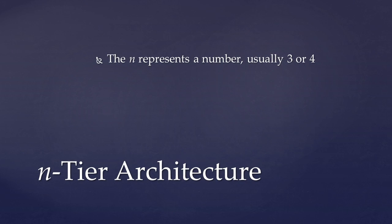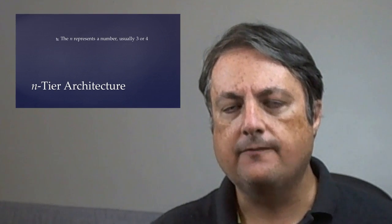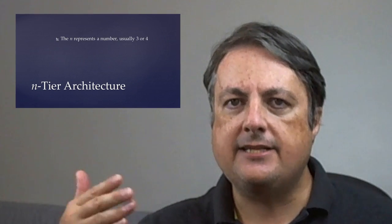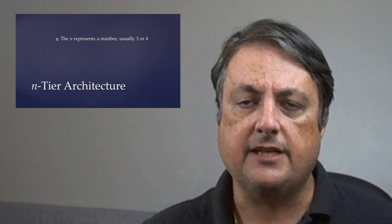The N in N-tier architecture just represents any number. Sometimes it's called a three-tier architecture or a two-tier architecture, but N-tier architecture means it can be any number of tiers.